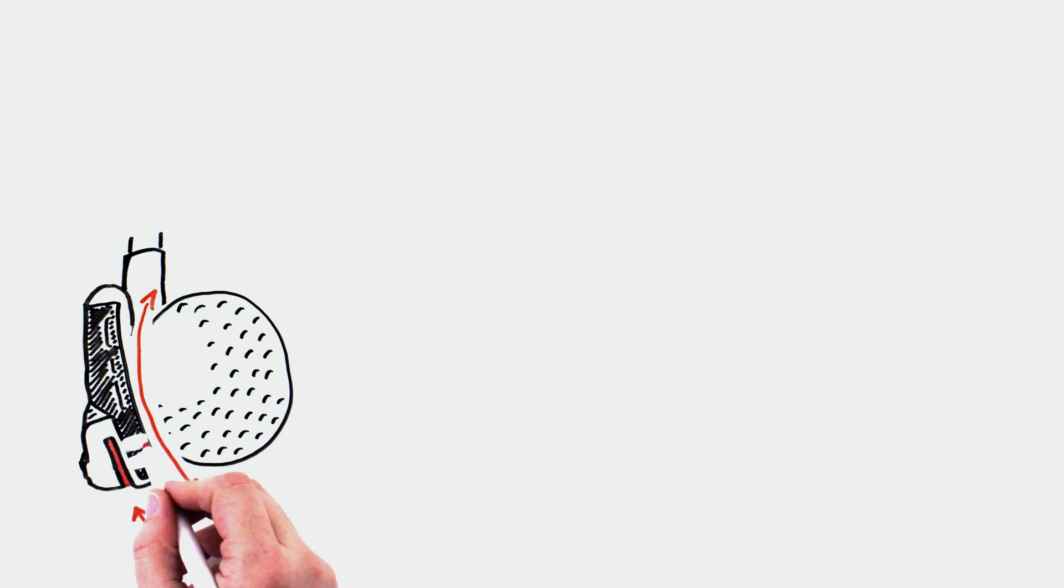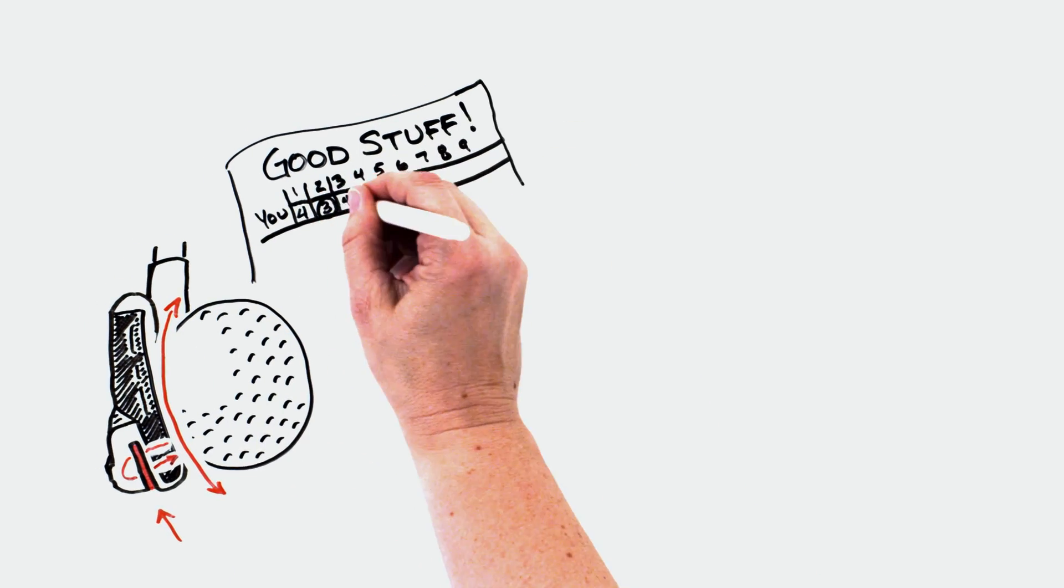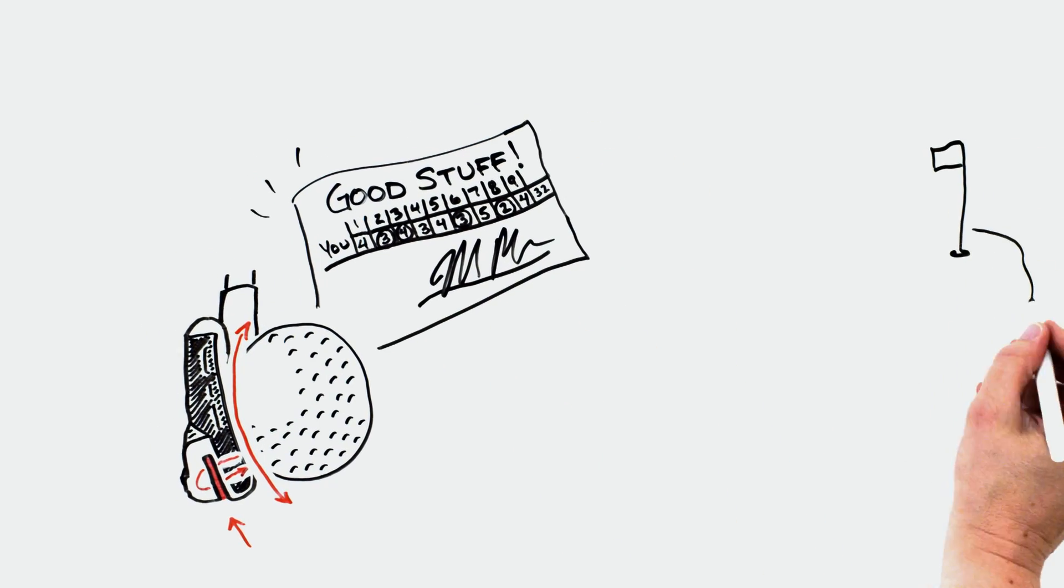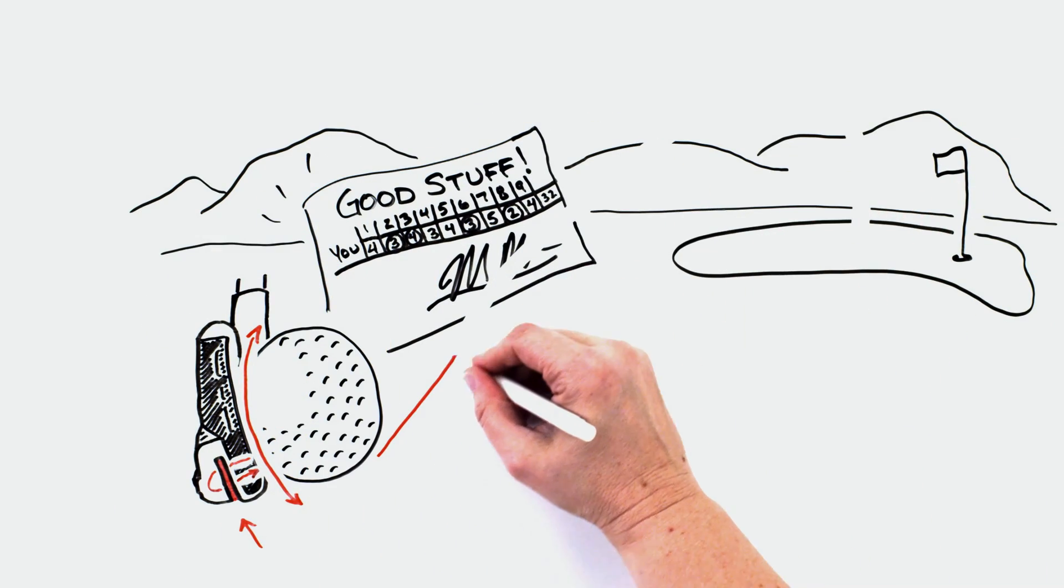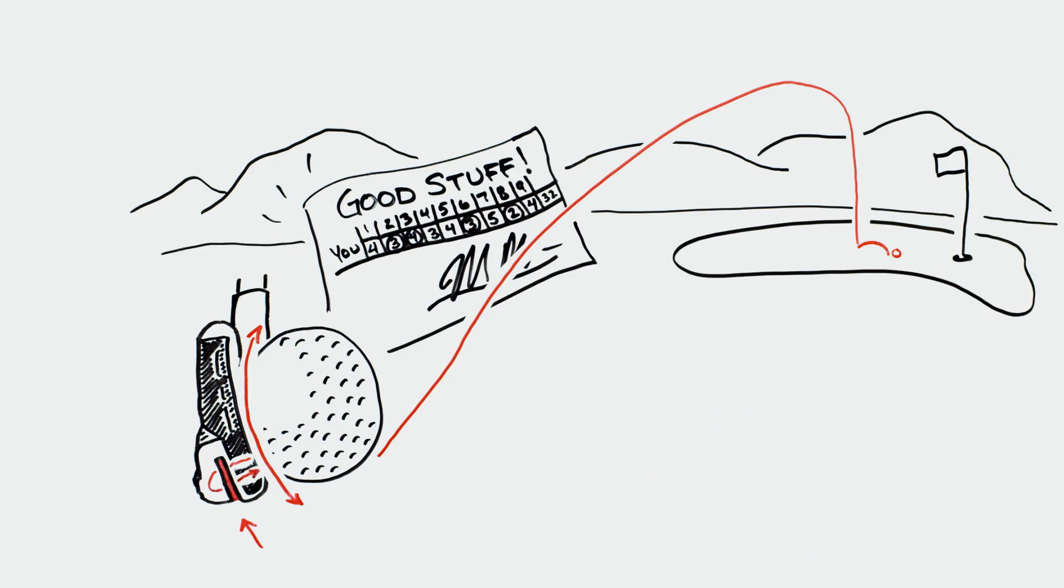the speed pocket allows the face to flex more and rebound faster, which makes a lot of good stuff happen, like increasing your ball speed and launch angle and making the ball fly higher and go farther.